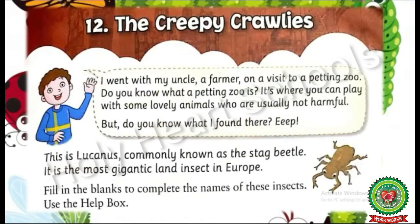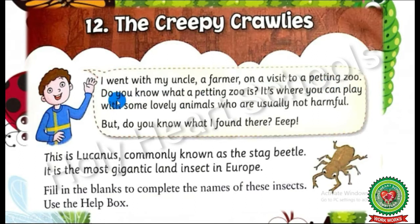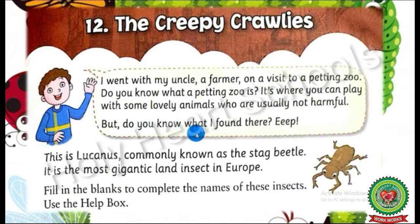Now we will start with our reading part. So put your pencil here. I went with my uncle, a farmer, on a visit to a petting zoo. Do you know what a petting zoo is? It's where you can play with some lovely animals who are usually not harmful. But do you know what I found there?